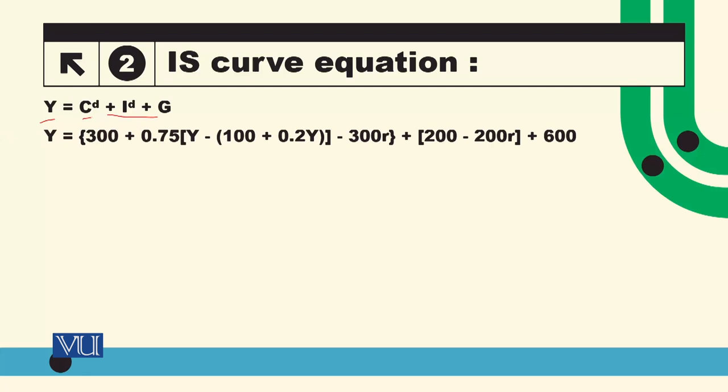So we have put these values which you have seen in the last slide. We have the consumption function, we have Y-T. Basically we have T information to put. And you have desired consumption CD, and this is ID, and this is government spending fixed at 600 level.